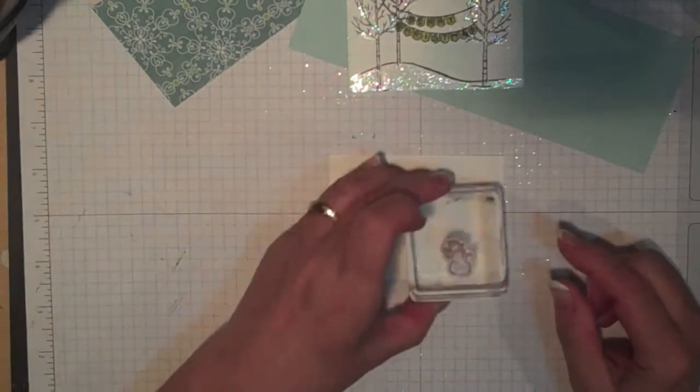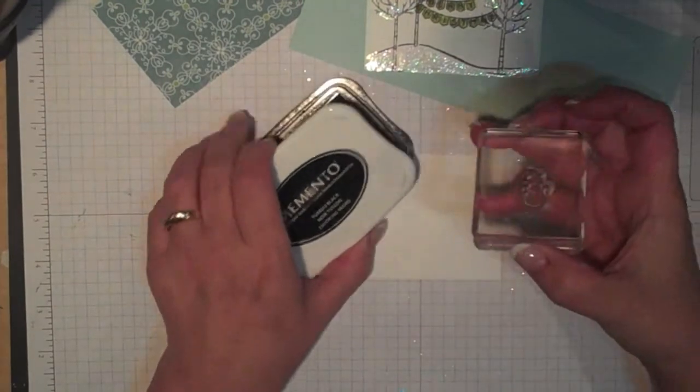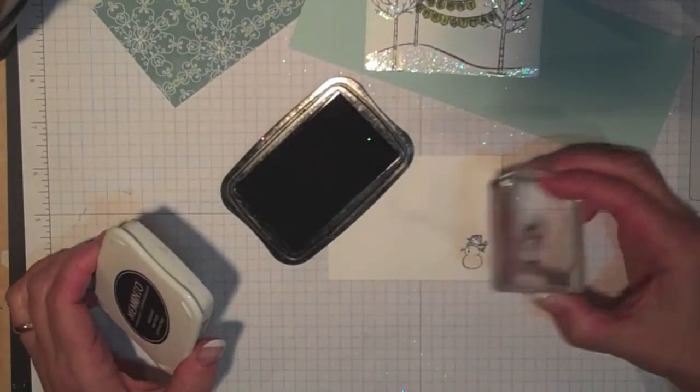The other stamping I need to do is on my inside piece, and I'm going to use the snowman and the Memento Tuxedo Black ink. I just want to put that on like that.